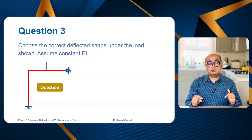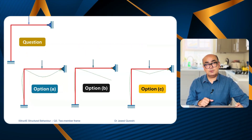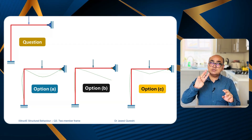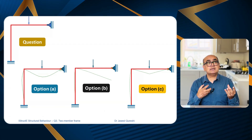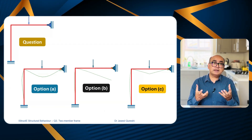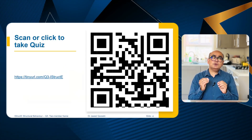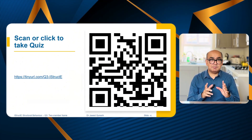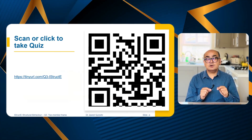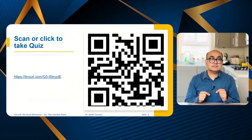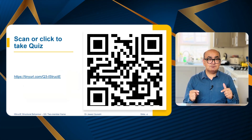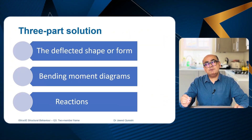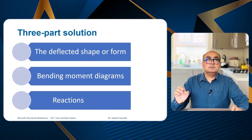A central point load is applied on the top beam. There are three options to choose from — you have to select the correct deflected shape for this member. If you want to attempt this question, pause this video for a few minutes and take the quiz by scanning the barcode or going to the URL mentioned on the slide. The link is also in the description below.